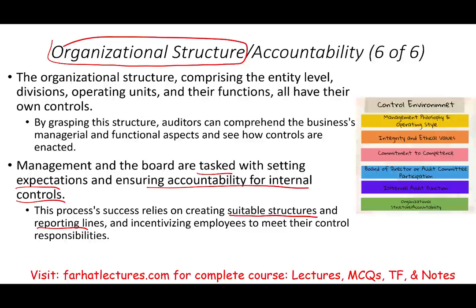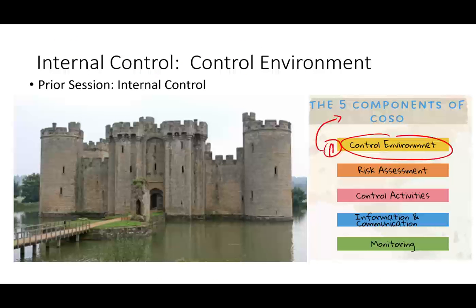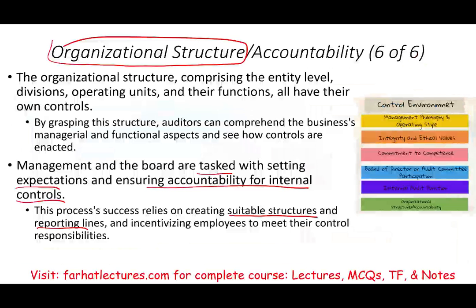In this session, we looked at the control environment as one of five components of internal control, and examined six different indicators that determine whether a company values its control environment — essentially the tone at the top and why it matters, because that tone flows all the way down. In the next session, we will look at the second component of internal control: risk assessment. You should go to Farhat Lectures and look at additional MCQs and true-false resources to better understand this topic. Good luck, study hard, invest in yourself — whether you are a CPA exam candidate or an accounting student — and stay safe.